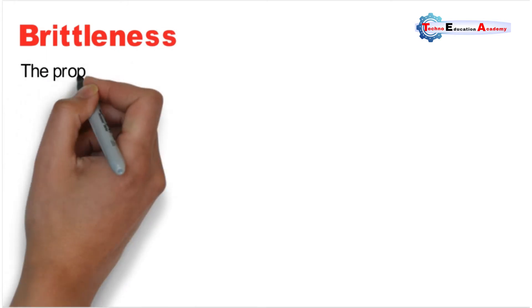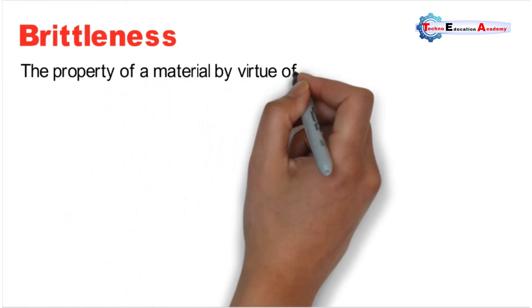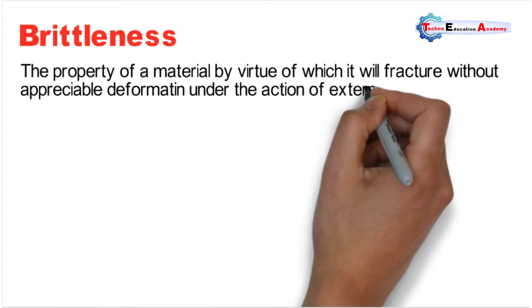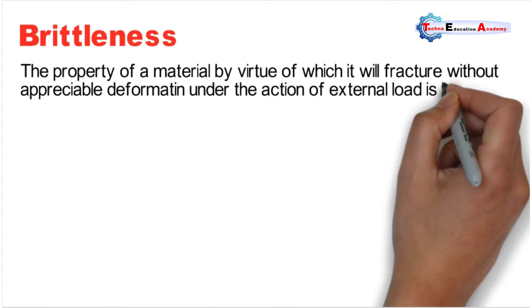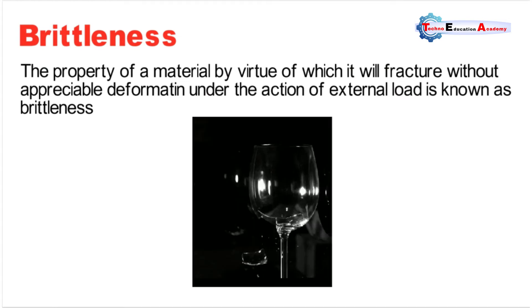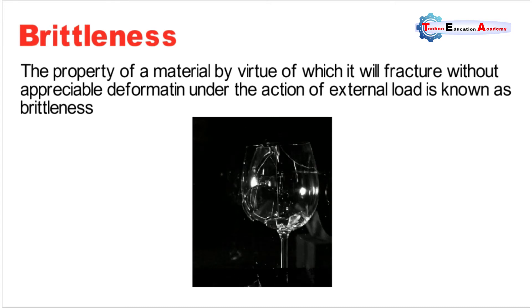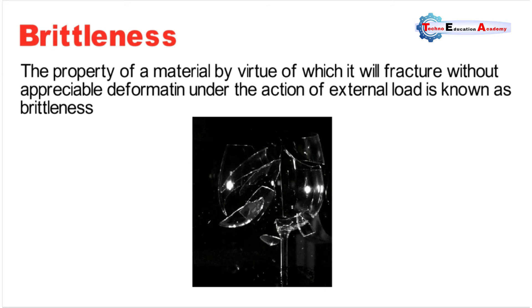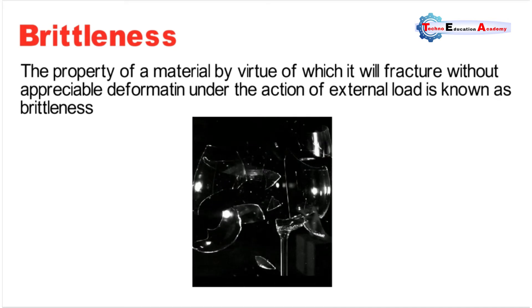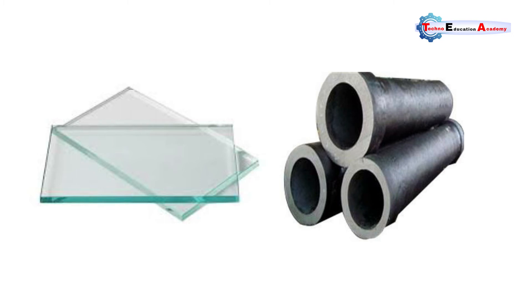The next property is brittleness. Brittleness is the property of a material by virtue of which it will fracture without appreciable deformation under the action of external load. Brittle materials have very low strength in tension compared to their compressive strength. For example, glass is a brittle material — when you apply force it will break. Materials with less than 5% elongation are considered as brittle. This property is desirable in machine parts subjected to compressive load. Examples of brittle materials are glass and cast iron.